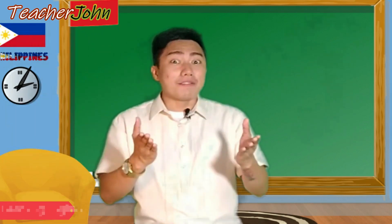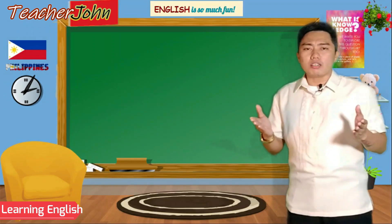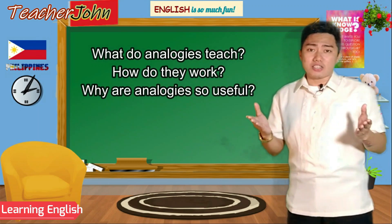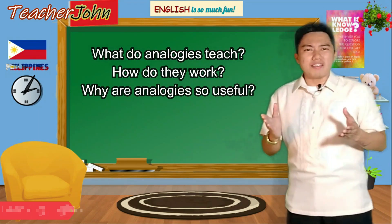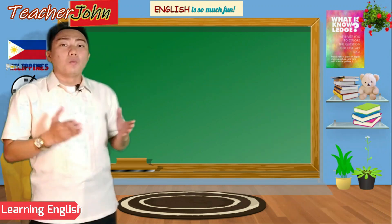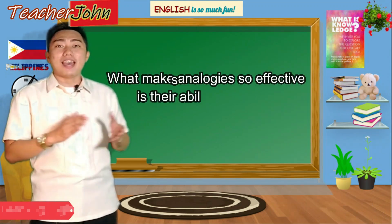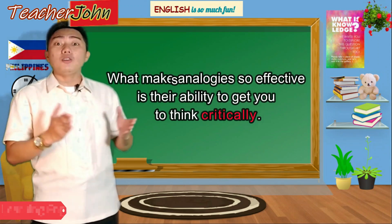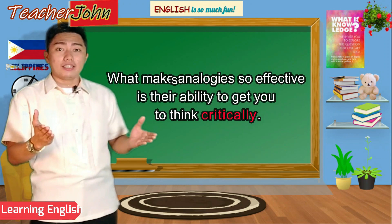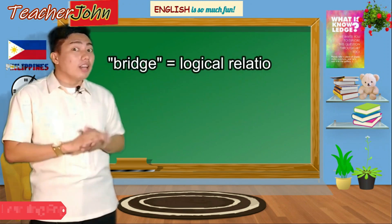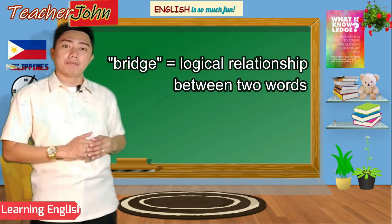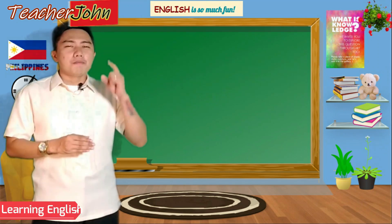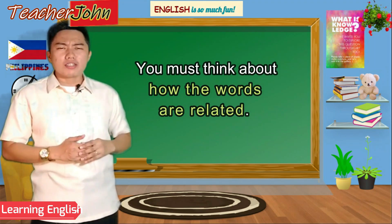Now it's time to advance to our lesson. People often wonder about the effectiveness of analogies. What do they teach? How do they work? Why are they so useful? What makes analogies so effective — is it their ability to get you to think critically? In order to answer an analogic question correctly, you have to form a logical relationship or a bridge between two words. You must think of how the words are related.